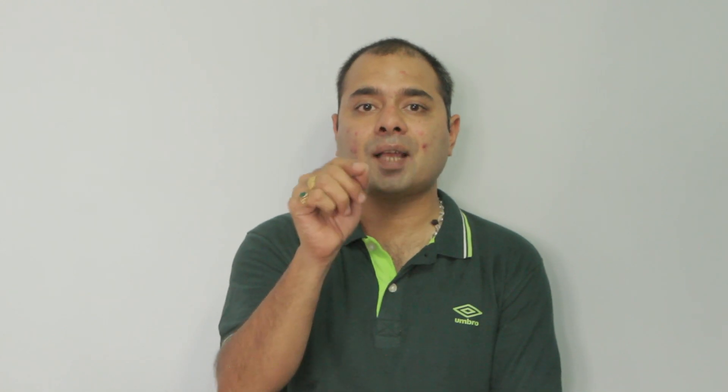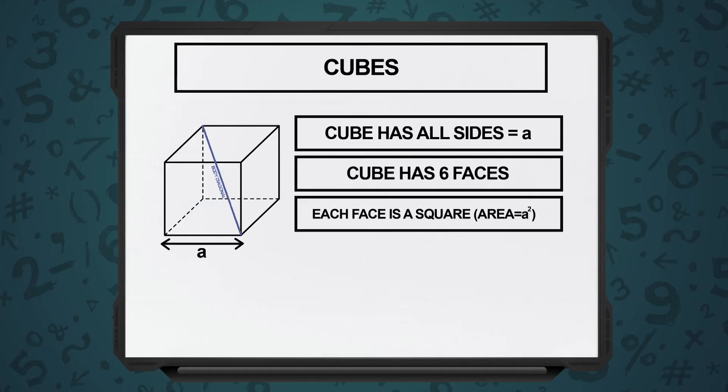So, if the length of the side of a cube is a, the surface area will be the sum of all squares involved. So, there are six faces in a cube.